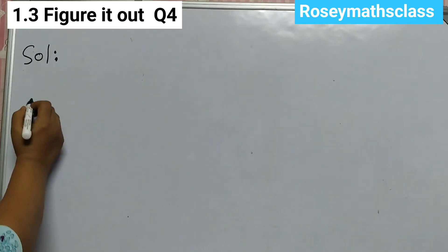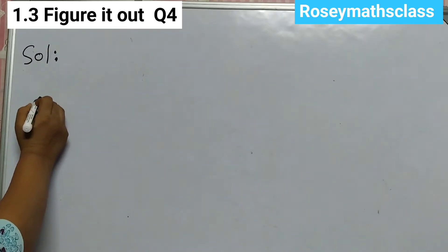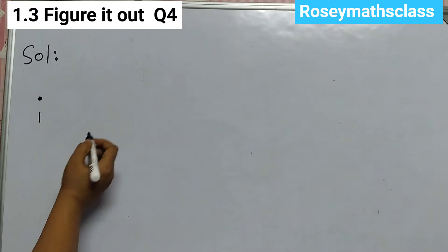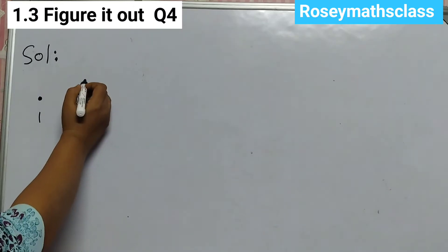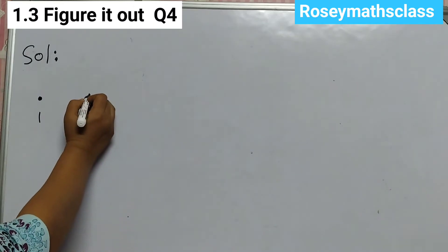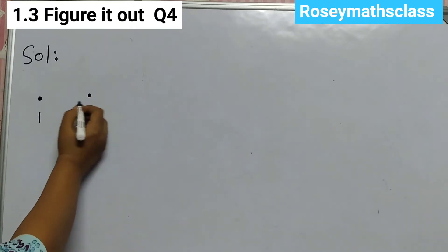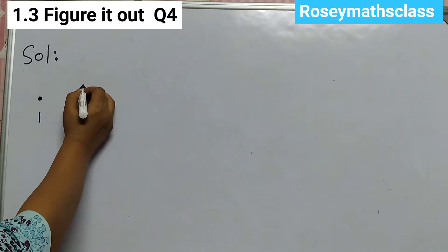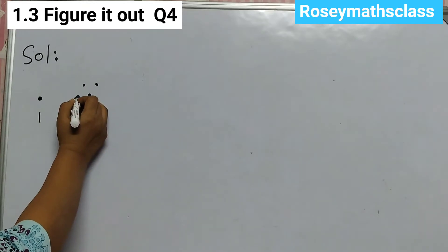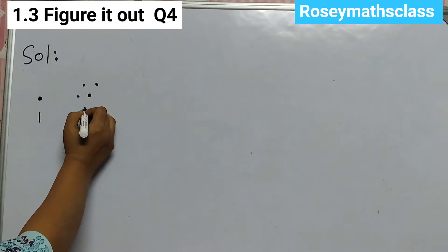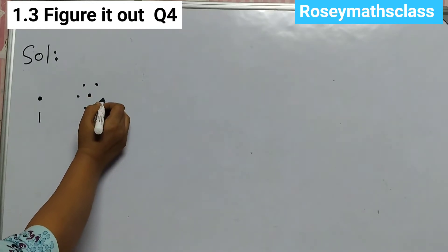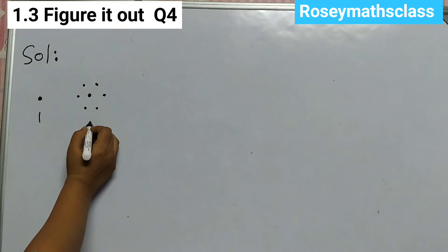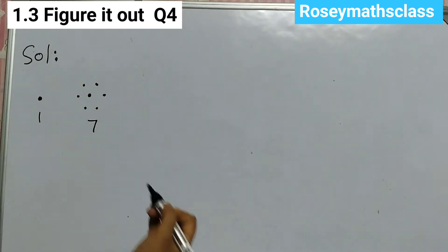The first one is just 1 dot. The second one is 7. So that means around this one center dot there will be 6 dots — 1, 2, 3, 4, 5, 6 — that makes a total of 7.